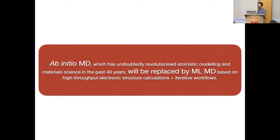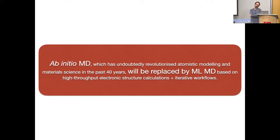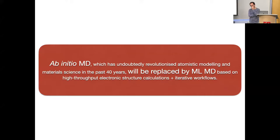Thanks very much — questions? There are a couple of questions online in the chat, but we'll start with the room. Thank you, very interesting talk. The machine learning for these new potentials — all the information is coming from the data, from the training data. In empirical potentials we use a lot of physics-inspired formulas. Is there a way to combine those two? Like you mentioned, if you do extrapolation and the data is not covered there, the error is horrible.